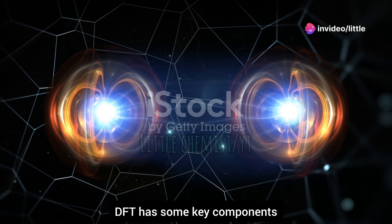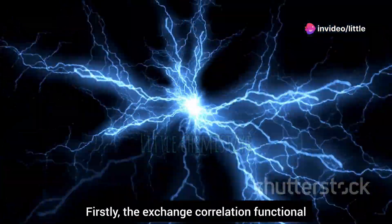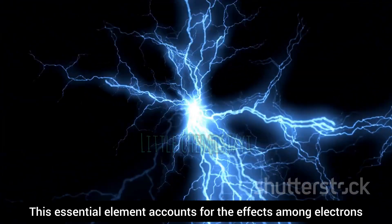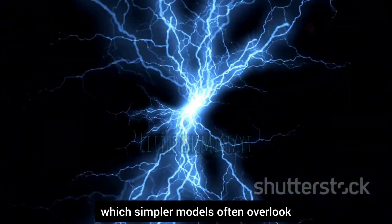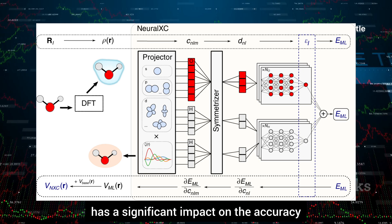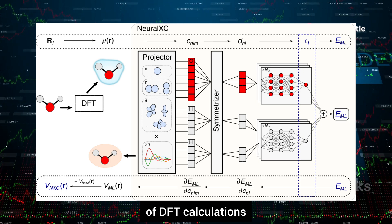DFT has some key components. Firstly, the exchange correlation functional. This essential element accounts for the effects among electrons, which simpler models often overlook. The choice of exchange correlation functional has a significant impact on the accuracy of DFT calculations.